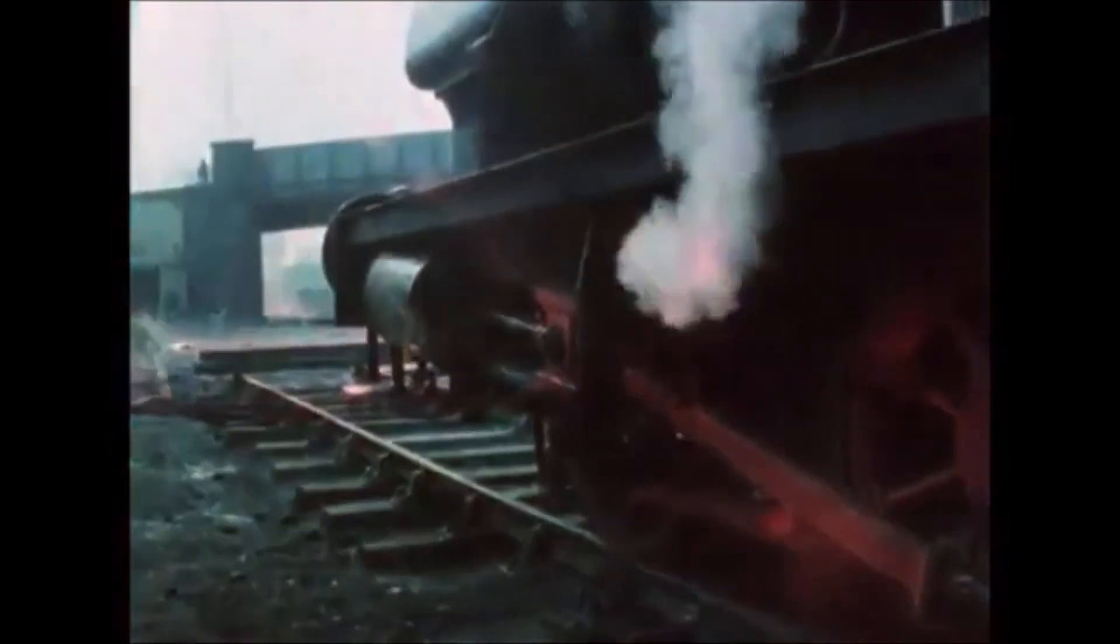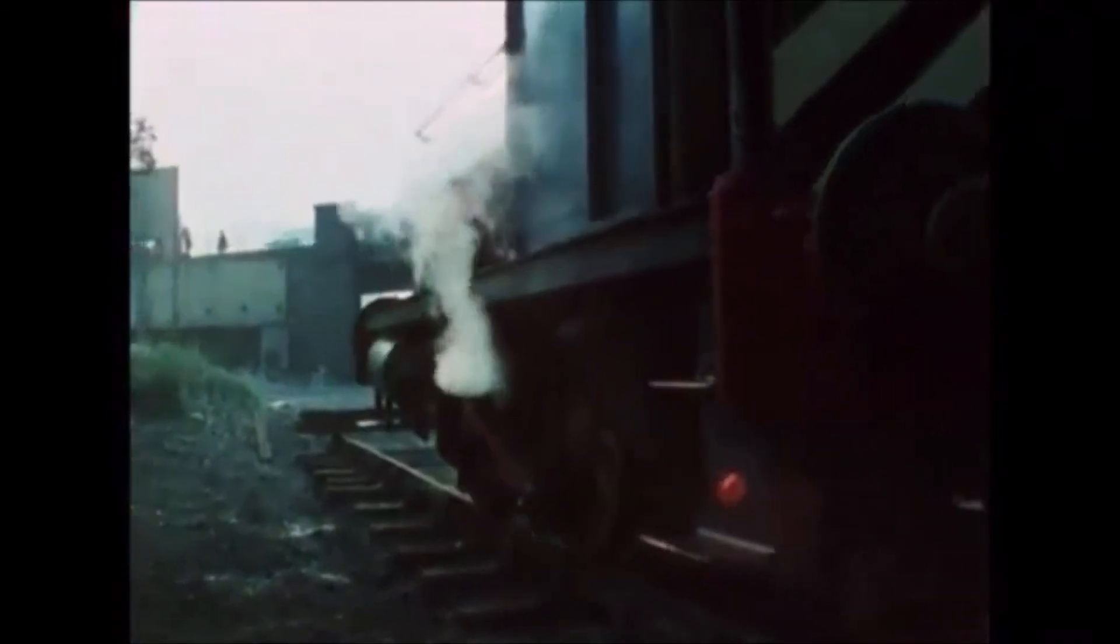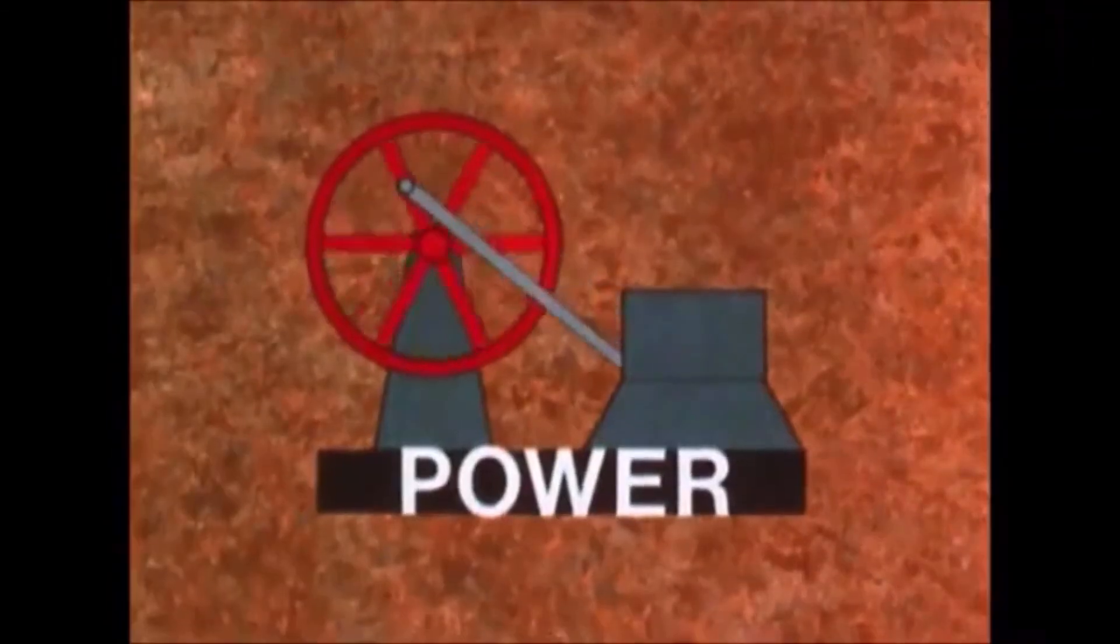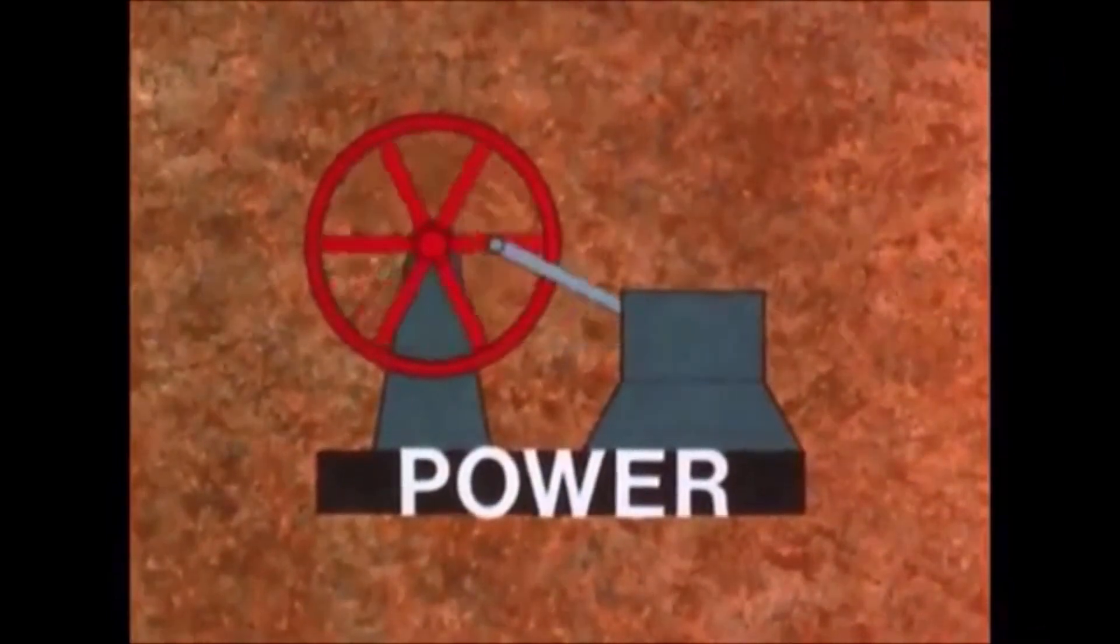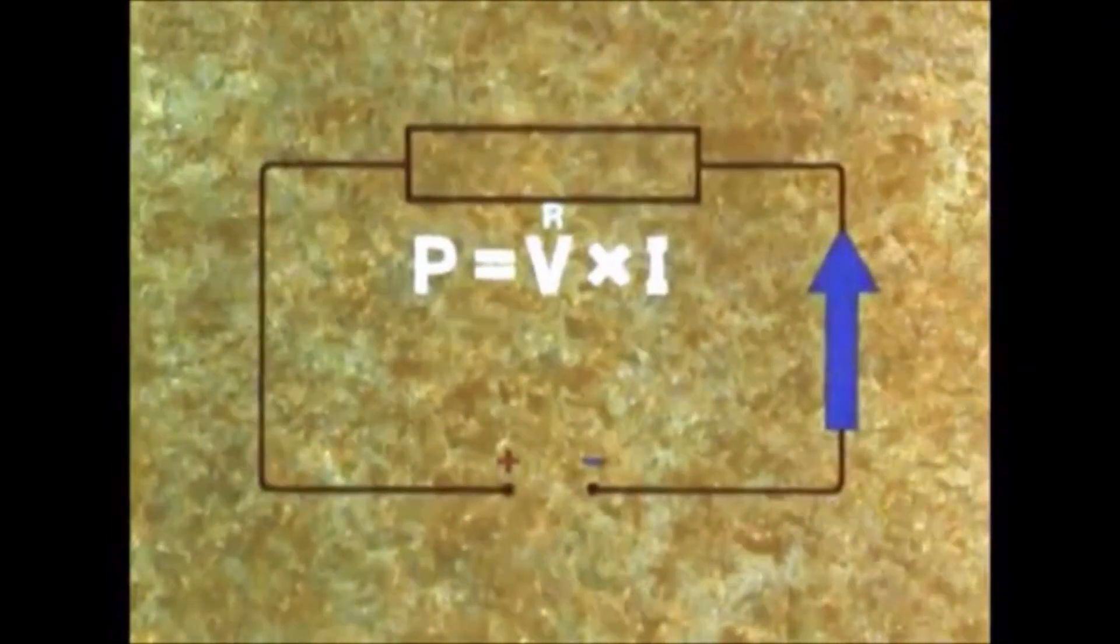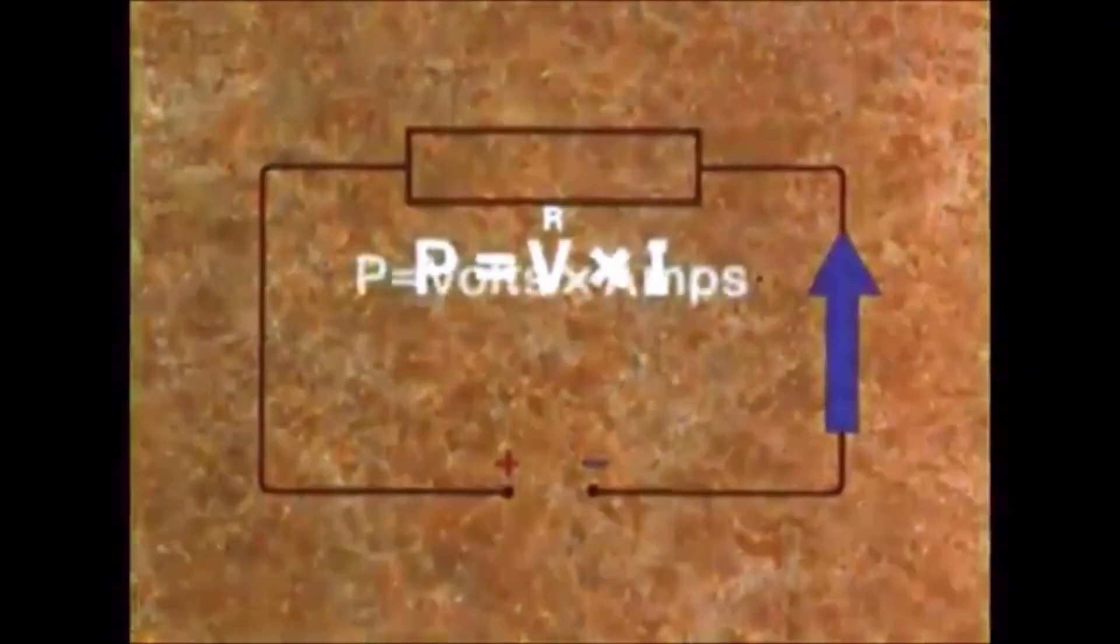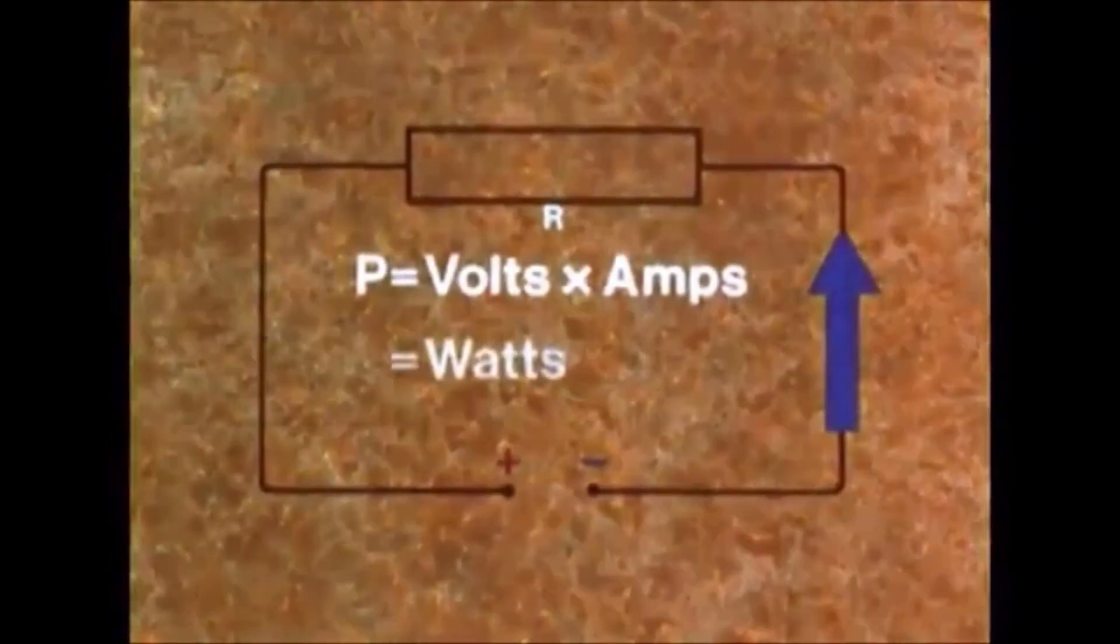We saw that work is done whenever a force causes motion, and we saw that power is defined as the rate of doing work. In electrical circuits, power is equal to voltage times current, volts times amps, and is measured in watts.